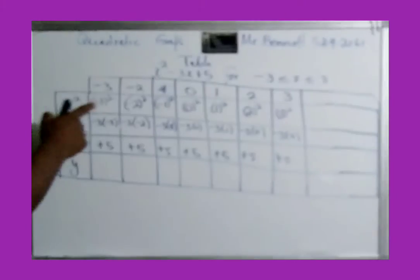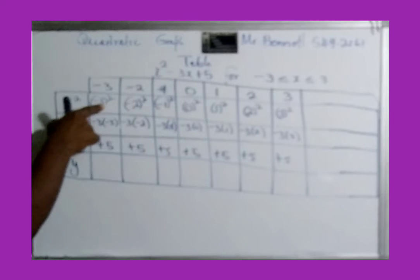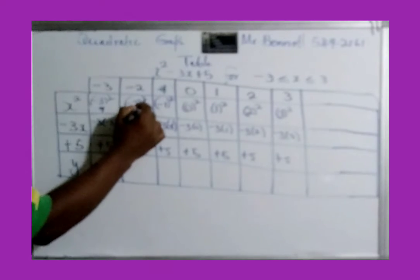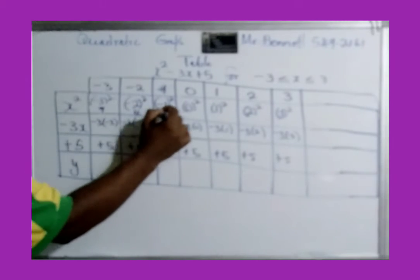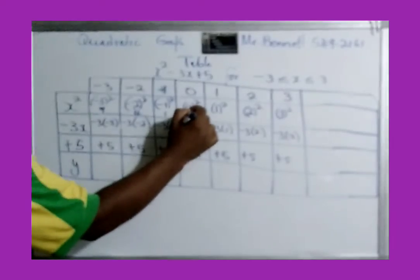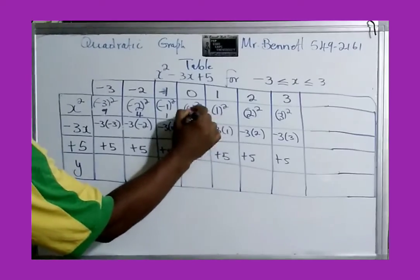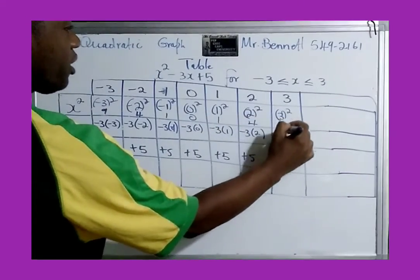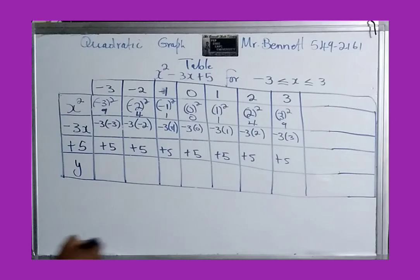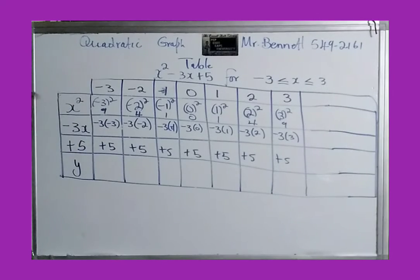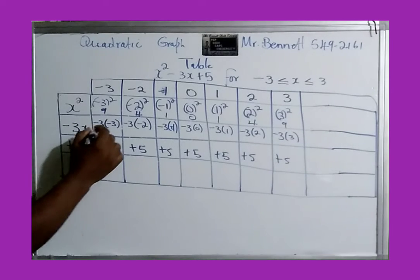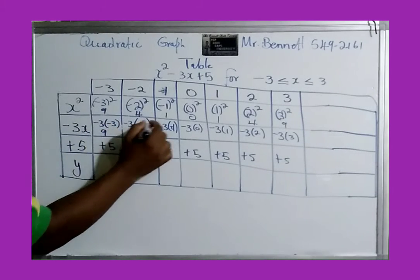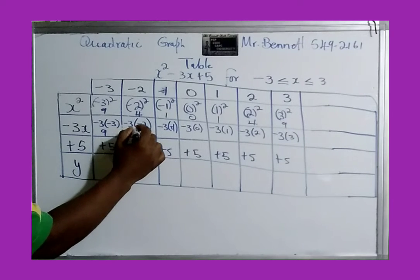Now we can compute. Negative 3 squared is 9 — any number squared is positive. Then: negative 2 squared is 4, negative 1 squared is 1, 0 squared is 0, 1 squared is 1, 2 squared is 4, 3 squared is 9.